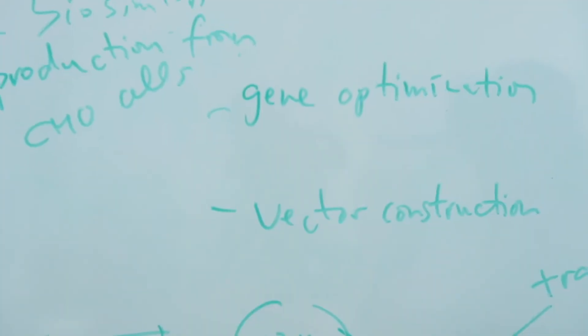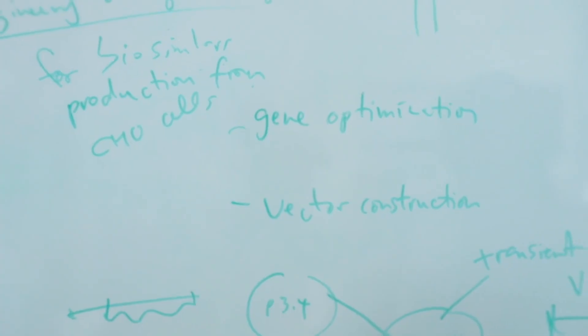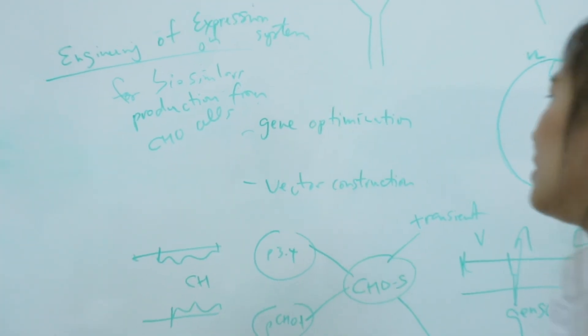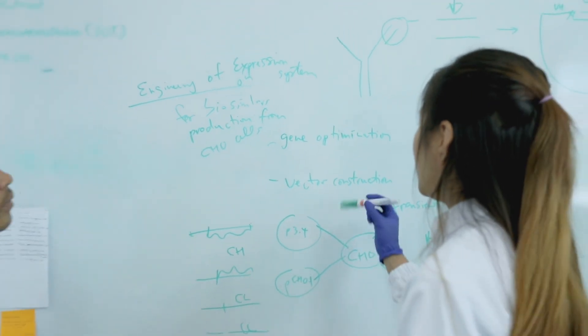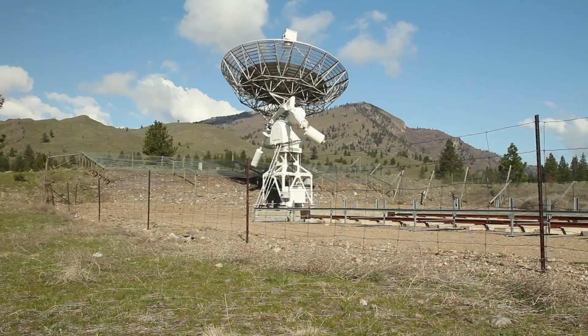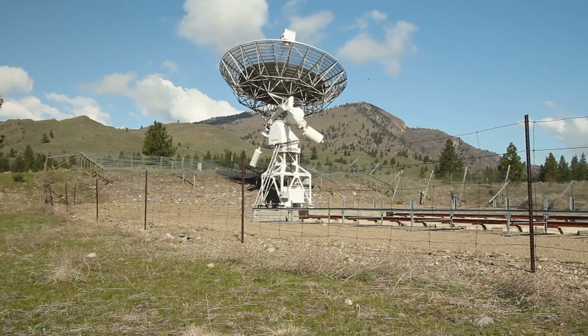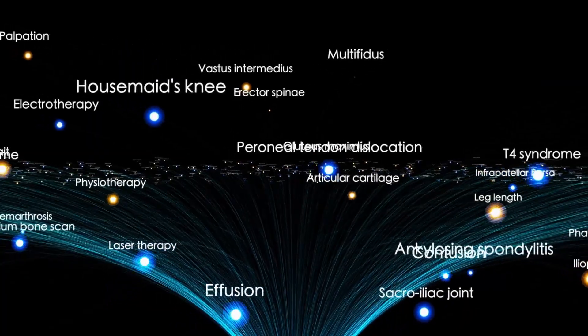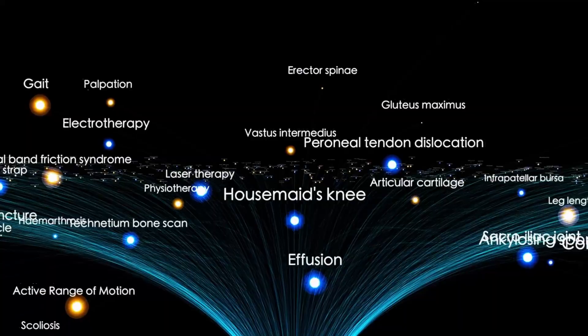3i Atlas, in contrast, behaves more like something being guided: holding position, conserving energy, adjusting just enough to stay on course. If it were a spacecraft, this is exactly how it would fly: silent, deliberate, and efficient. The question is, toward what?